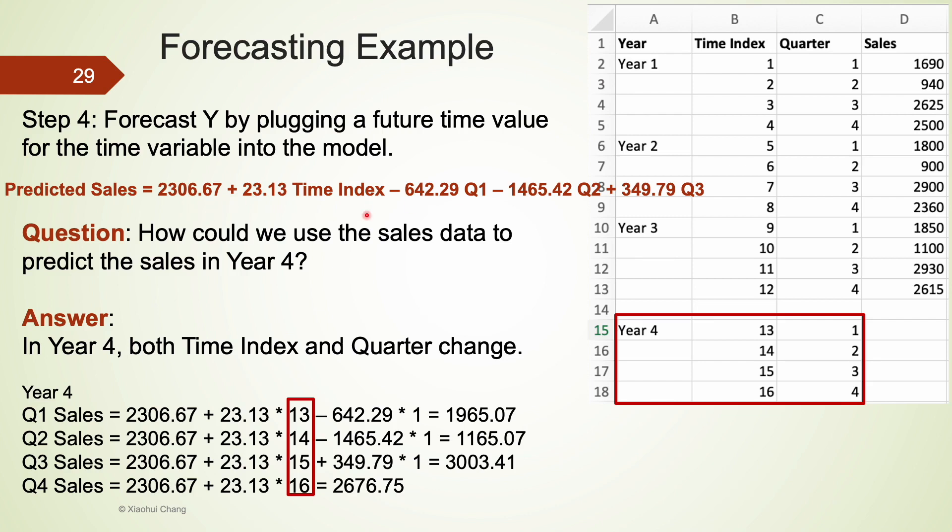Let's see how we can use our model to predict the sales in year 4. There are four quarters in year 4 to predict. Before we plug all the numbers into the estimated equation, it is very important to notice that both time index and also the dummy variables will change. For example, for quarter 1 in year 4, the time index is 13, and the time index for last quarter in year 4 is 16. After we plug all these numbers and also the quarter information into our predicted equation model, we are able to predict the sales for year 4.